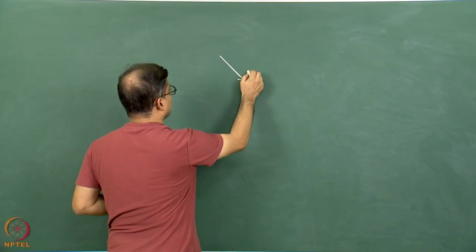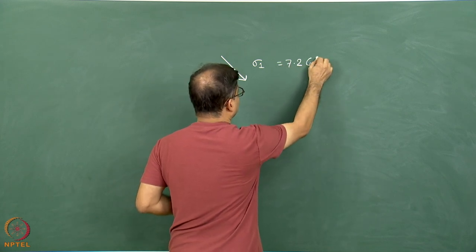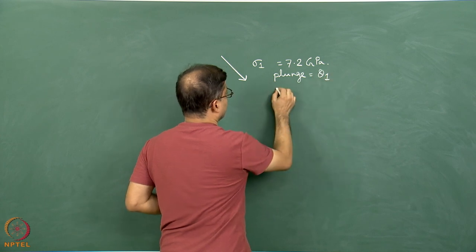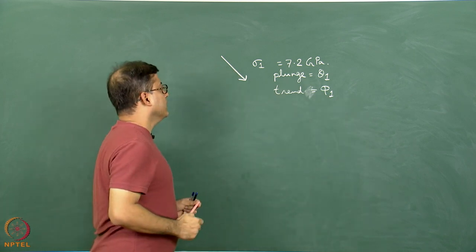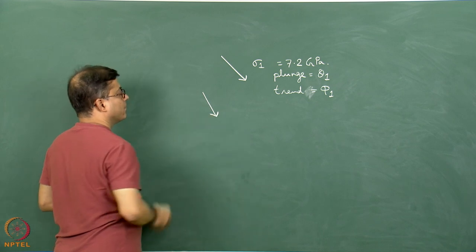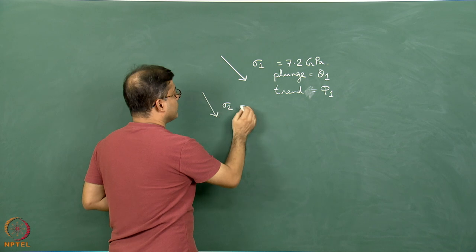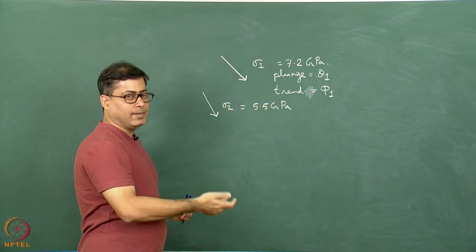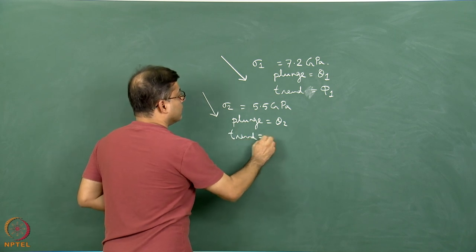Consider this is the given sigma 1. It has a magnitude, plunge, and trend. I give some value: 7.2 Giga Pascal, with a plunge of theta 1 and a trend of phi 1. In the space there is also another stress sigma 2, having a value of 5.5 GPa. The plunge of sigma 2 is theta 2 and the trend is phi 2.